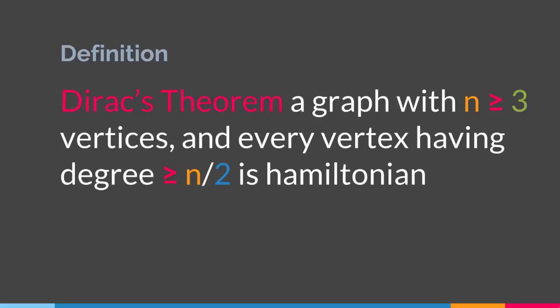If a graph has this particular condition — meaning it has the number of vertices greater than 3, and every vertex having degree greater than half of the number of vertices — it will be Hamiltonian. That is the sufficient condition for a graph to be Hamiltonian according to Dirac's theorem. As I mentioned with Ore's theorem, if this condition does not exist, it does not mean the graph will not be Hamiltonian.